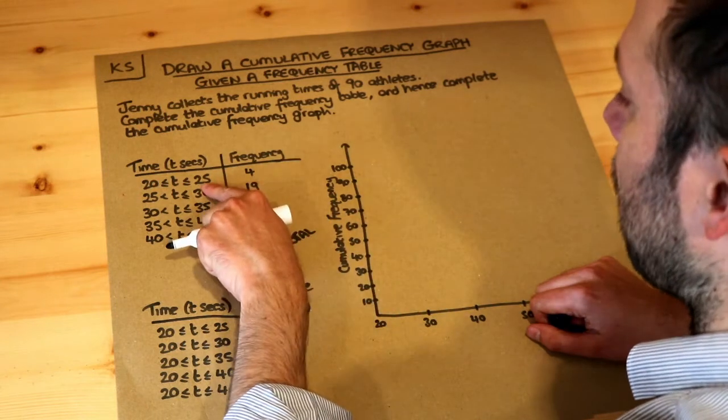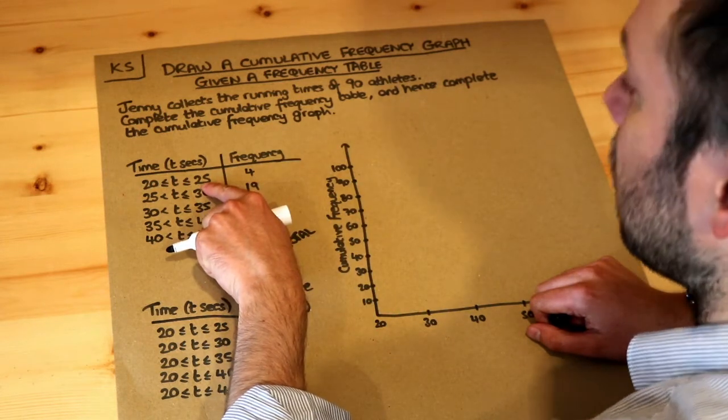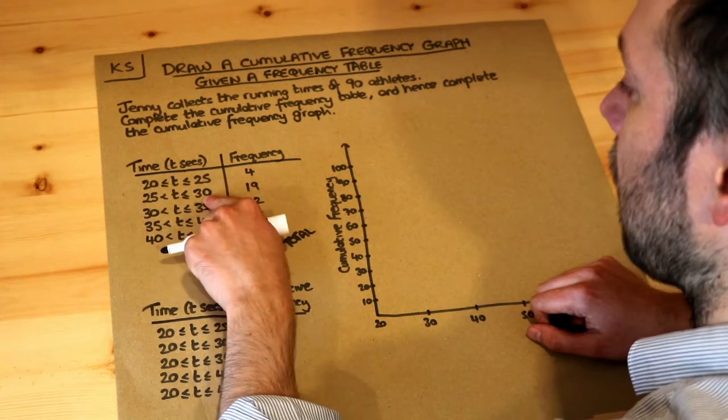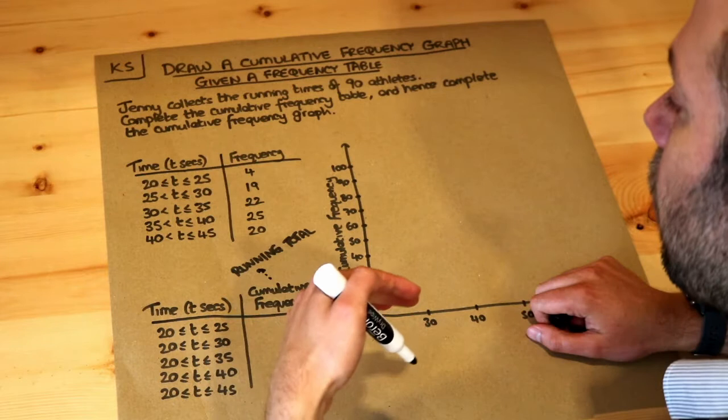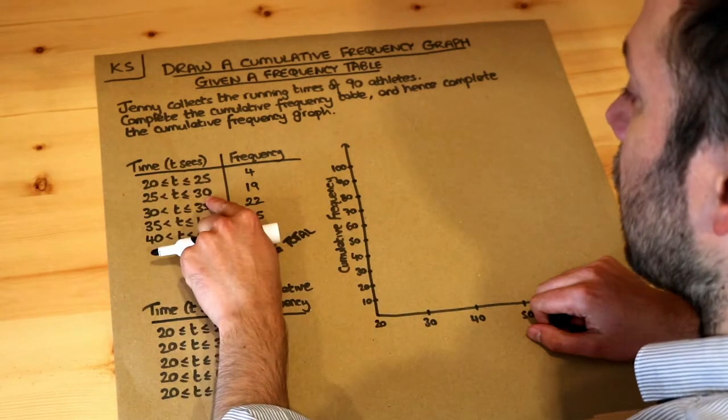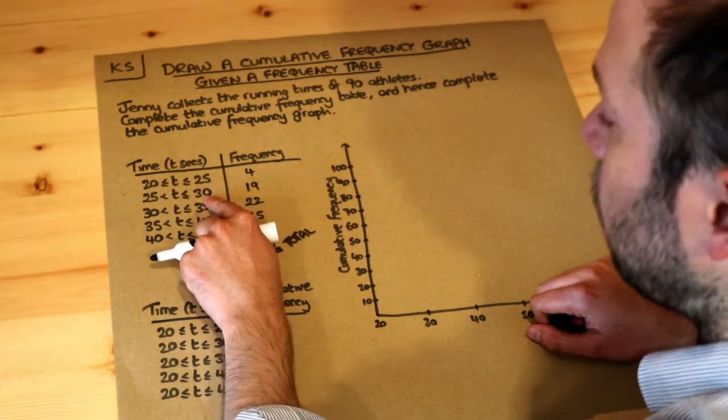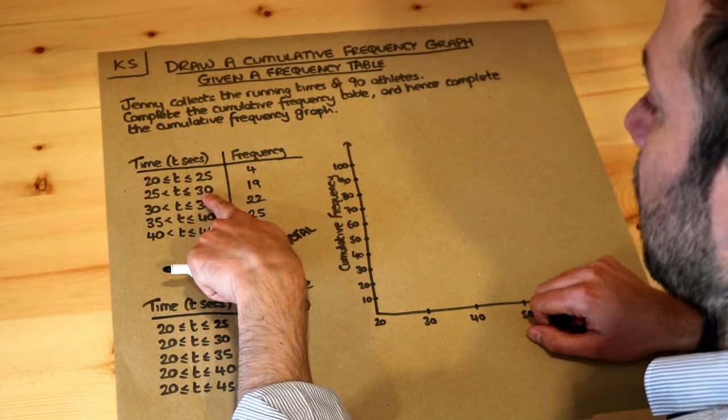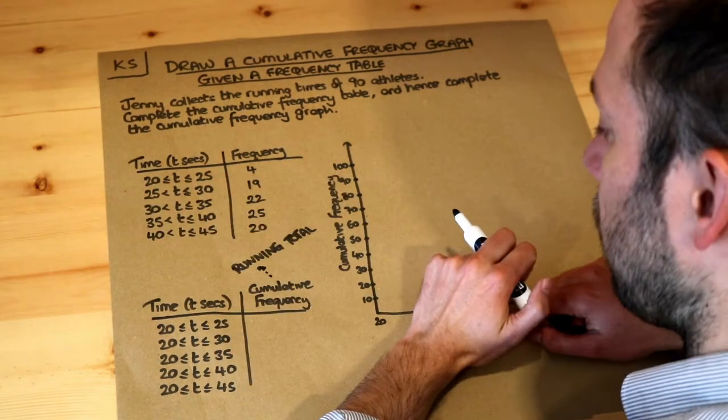Now we know we've got four athletes with a time up to 25 and then if we see another 19 athletes between 25 and 30 we know that up to a time of 30 we would have in total seen 23 athletes because if it's up to 30 we've also got the people in the group before as well.